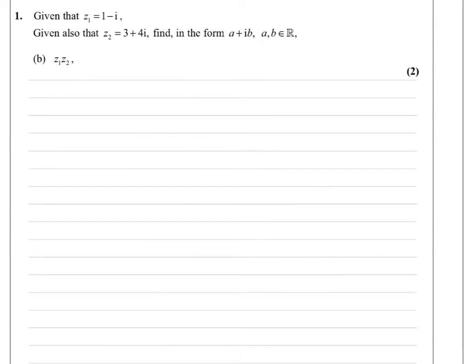In part B of this question, we're asked to find the product of Z1, Z2. So, quite simply, we need to multiply these things out. So Z1 is 1 minus i, and Z2 is 3 plus 4i. And you just multiply these out like you would any other brackets.